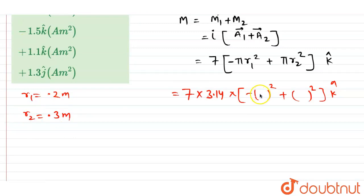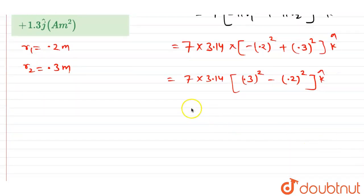So here we can write 0.2 meters squared plus 0.3 meters squared. We can write this as 7 into 3.14, let's say positive as here, and minus 0.2 squared.